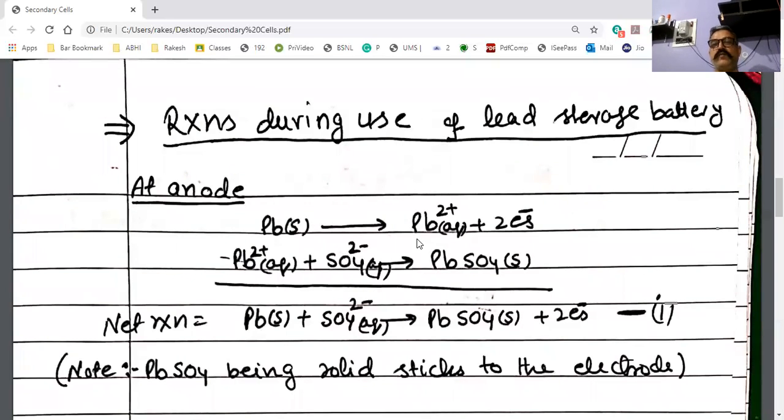Lead loses electrons at the anode. Anode's job is to lose electrons. At anode, loss of electrons occurs: Pb gives Pb2+ plus 2 electrons. Now this Pb2+ is suspended in our electrolyte, which is H2SO4 solution. Since PbSO4 is solid, it sticks to the electrode.